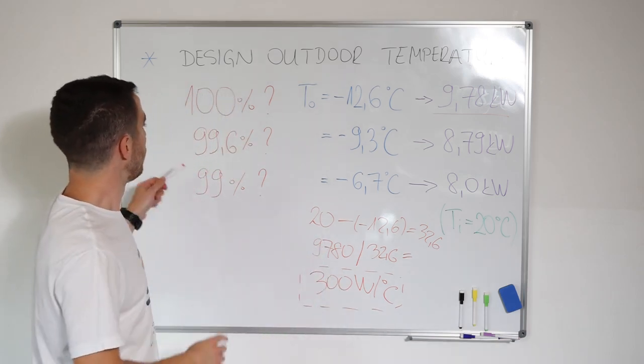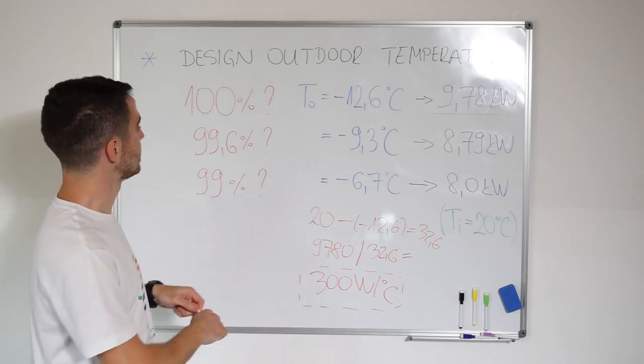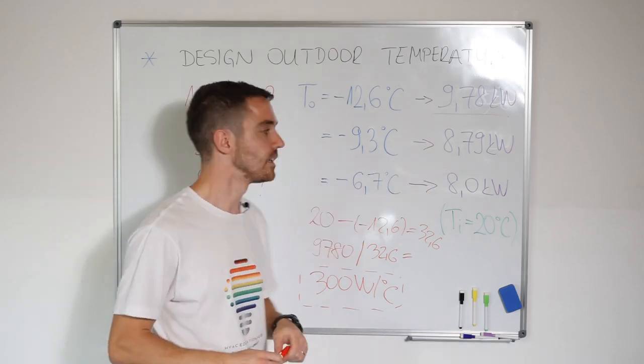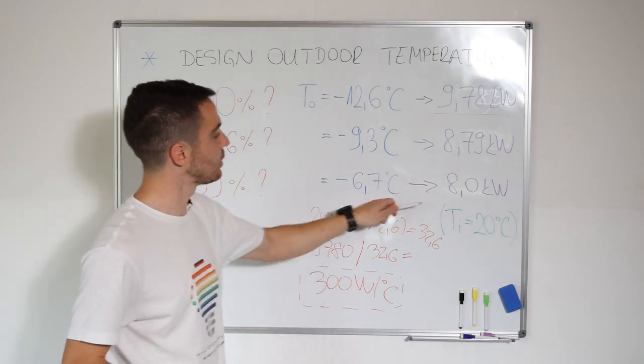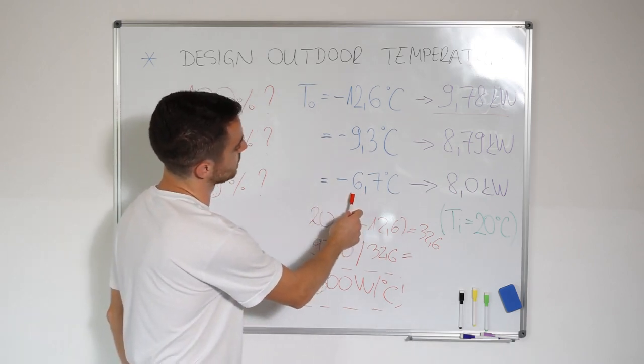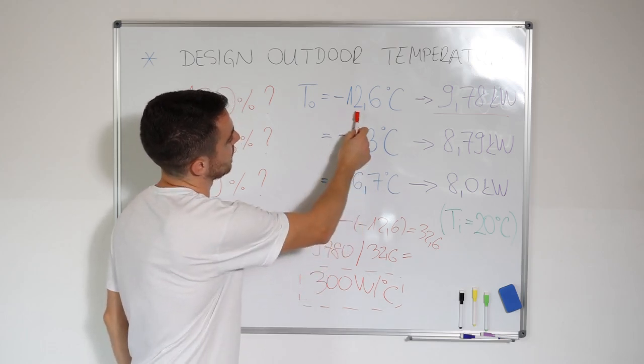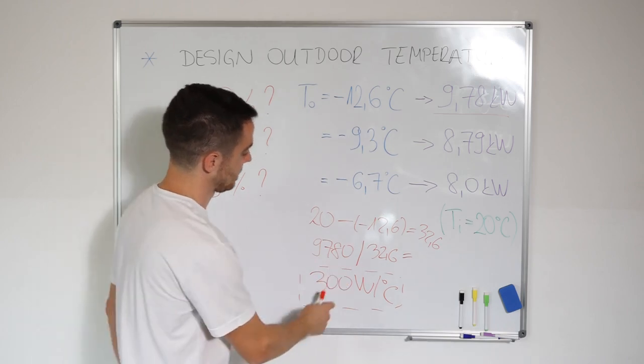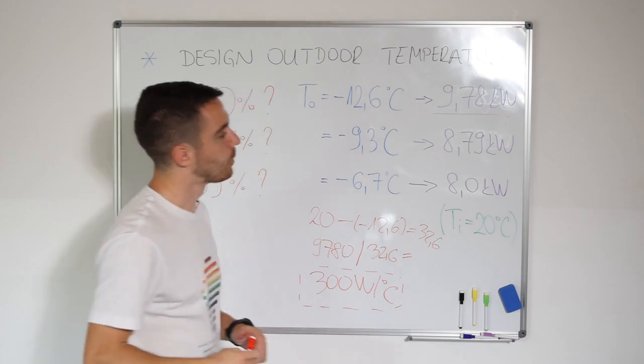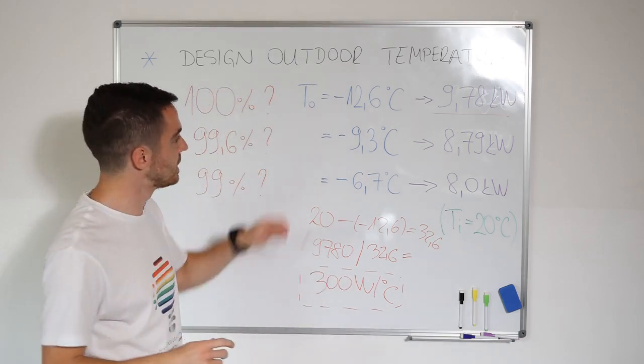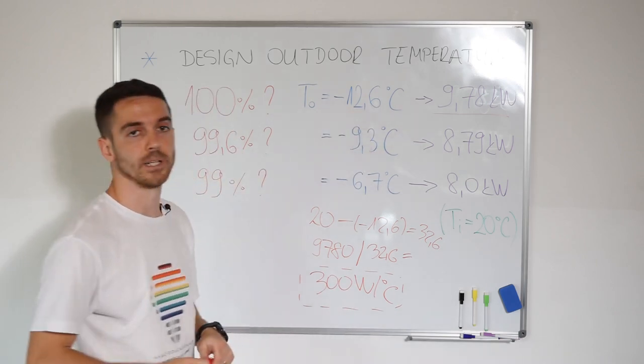If we know this, we can calculate what is at minus 9.3 degrees, we have 8.79 kilowatts. And at minus 6.7, we have 8 kilowatts. So there is a very big difference between minus 6.7 and minus 12.6. That's 6 degrees and around 1.8 kilowatts. So 300 watts multiplied by 6 degrees equals 1.8 kilowatts.